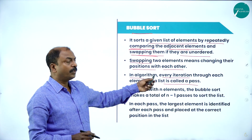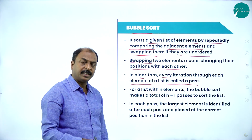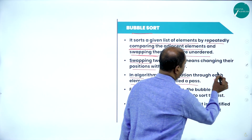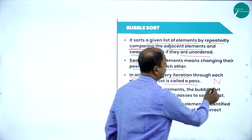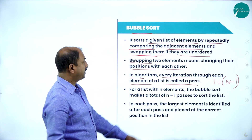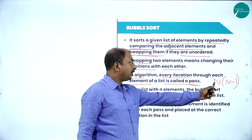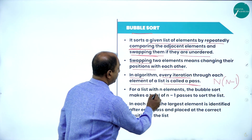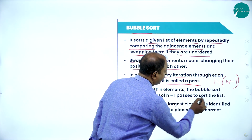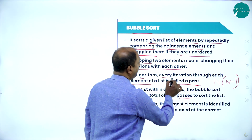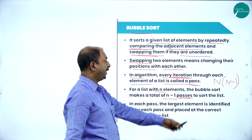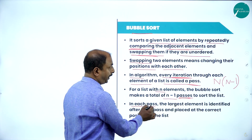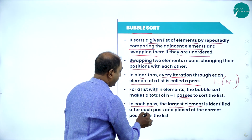In the algorithm, every iteration through each element of a list is called a pass. We are doing this program with the help of looping structures, generally a for loop. The for loop takes n minus 1 iterations. Suppose the length of a list is n, so the looping structure takes n minus 1 repetitions or n minus 1 passes. For a list with n elements, bubble sort takes n minus 1 iterations or passes to sort the list.